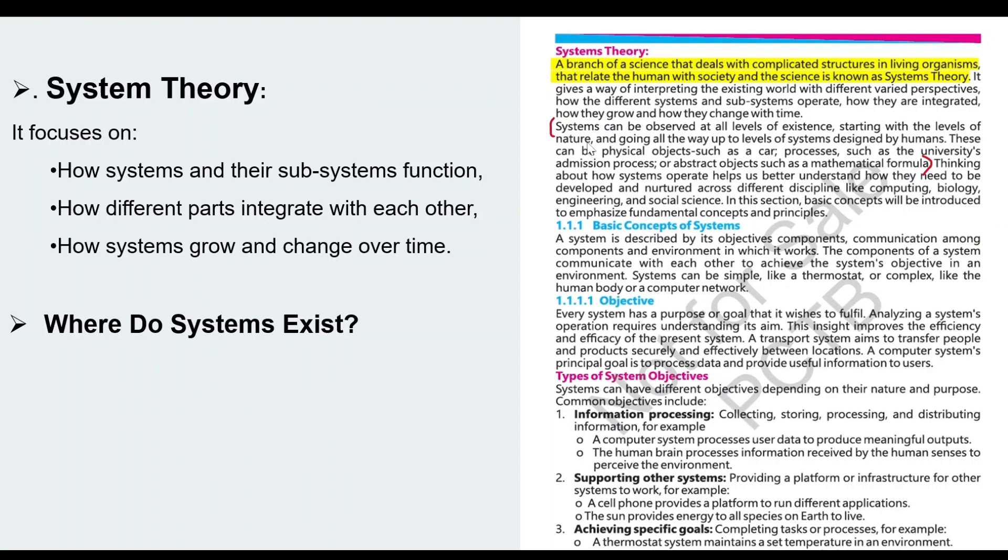In which it is explained that systems are found everywhere - in nature like plants, animals, weather systems we can observe them, then some human-made designs like cars, computers.